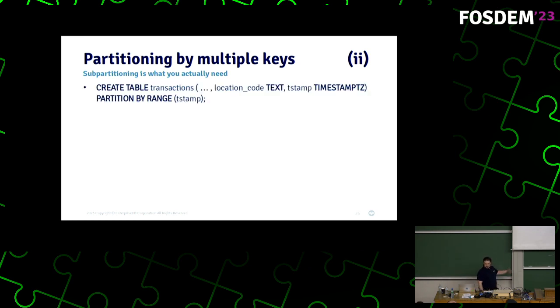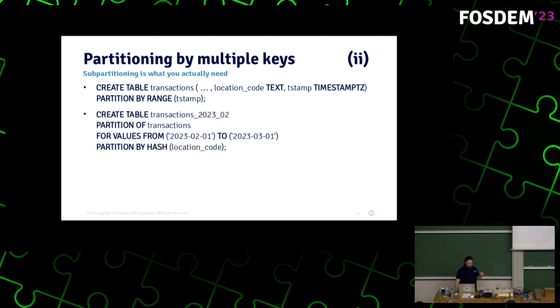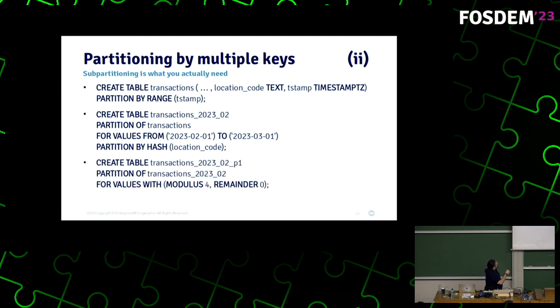So, you create table transactions, location type, et cetera, et cetera. Partition by range of timestamp first. Okay. Because we want the first level of partitioning to be timestamp based. Then, you create table partitions as transactions, excuse me, as a partition of transactions for values from the first of February to the first of March. And we choose hash partitioning within those partitions for the location code. And all that means over there is that when I create the first partition, it's for values with modulus 4 remainder 0 means just divided by 4 equal parts. And that creates a partition, a table that is partitioned by both things. Sub-partitioned. Now, let's talk a little bit about performance.